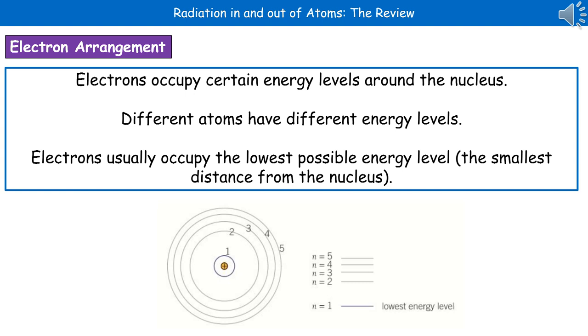We already know that electrons occupy shells around the nucleus, but they actually occupy certain energy levels around the nucleus. Different atoms have different energy levels. The electrons usually occupy the lowest possible energy level, because that's the smallest distance from the nucleus, as you can see in the diagram at the bottom there.